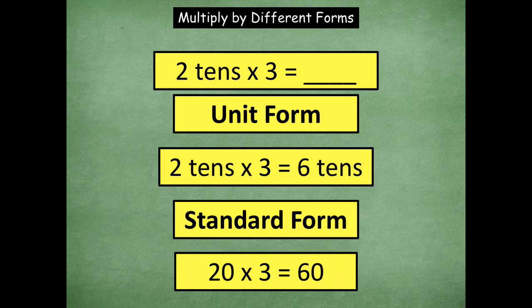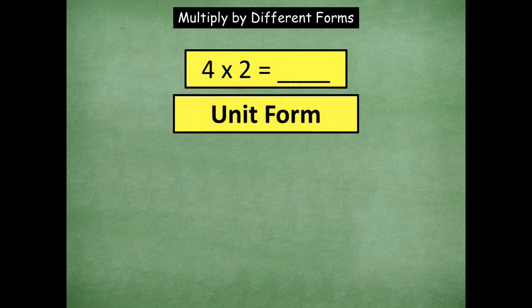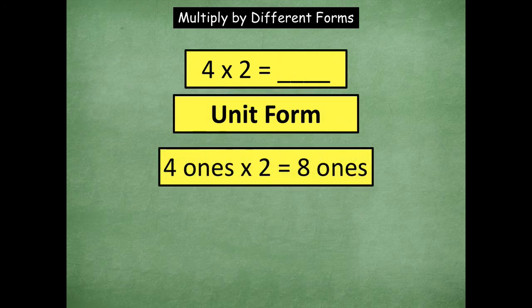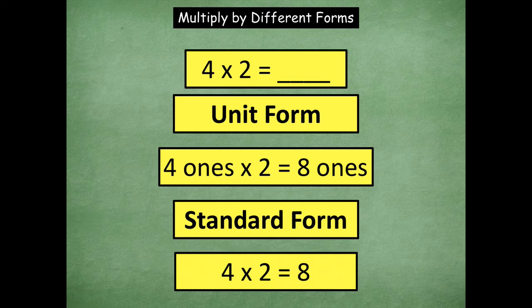See the difference between unit form and standard form? The unit form tells us it's not just two anymore — it's two tens, and two tens equals 20. Now let's look at four times two. The unit form is four ones times two equals eight ones, because if it's not labeled as anything else, it's just ones. Then standard form is four times two equals eight.